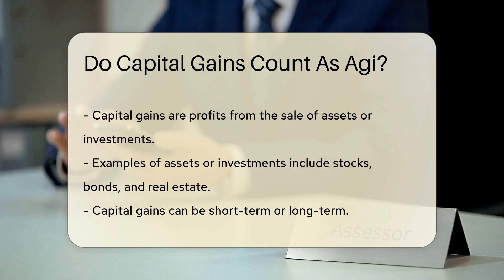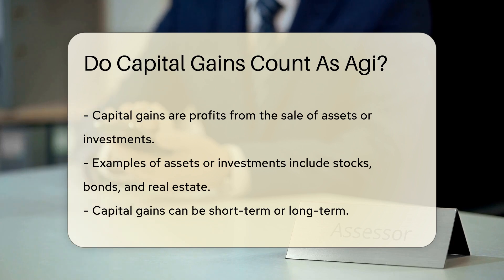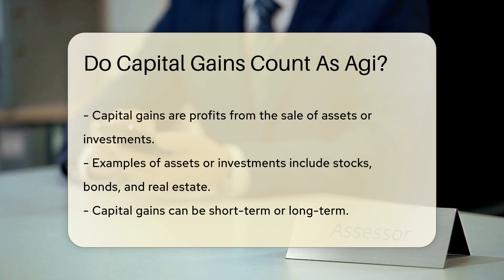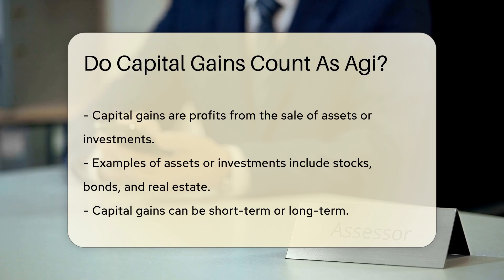Capital gains are the profits from the sale of assets or investments, such as stocks, bonds, or real estate. These gains can be classified as either short-term or long-term, depending on how long the asset was held before being sold.